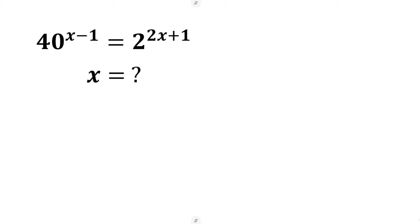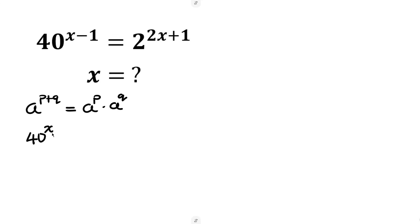Our first step is to apply the law of indices that says a to the power of (p + q) can be expressed as a^p times a^q. That means the left side becomes 40^x times 40^(negative 1), and the right side becomes 2^(2x) times 2^1.